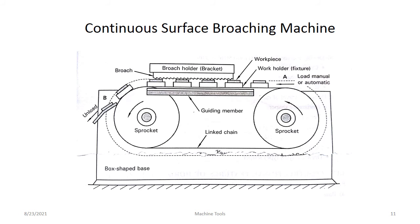Now the continuous broaching machine. There are two wheels with a belt and a broach holder. These are the workpieces. After broaching they come to the unloading station — they can be unloaded manually or automatically. Workpieces are loaded on the belt with work holders, and the broaching tool performs broaching. There are two sprocket wheels with a linked chain and guiding members. Continuous surface broaching machines are manufactured in both horizontal as well as vertical types.